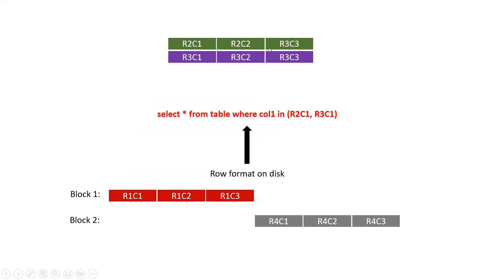The point is we had to read all the blocks. To process this query, we had to read all the blocks. There is no reason why Spark can skip any of the blocks. You are giving a WHERE clause here, but Spark doesn't know which block may have data for this condition or which block may not. So there is no block-level skipping in this approach.